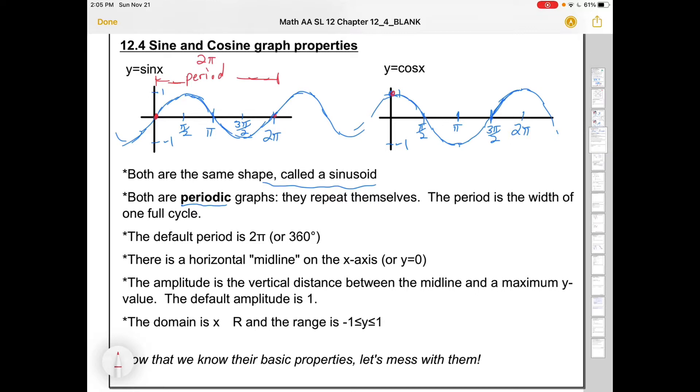Same thing with cosine. If we count from the top to the next time it goes to the top, that's a full period. It's done its exact thing, and then it just repeats itself. And that default period is 2π. Or, if we're in degrees, 360 degrees.